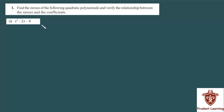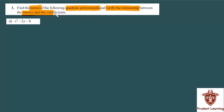Alright, let us see the very first question of Exercise 2.2 for the chapter Polynomials of Class 10th. The question says: find the zeros of the following quadratic polynomials and verify the relationship between the zeros and the coefficients.